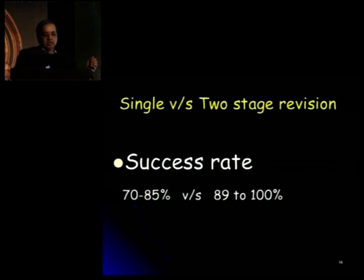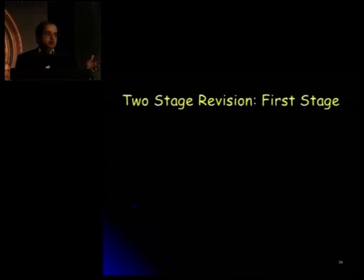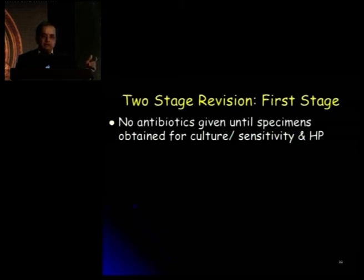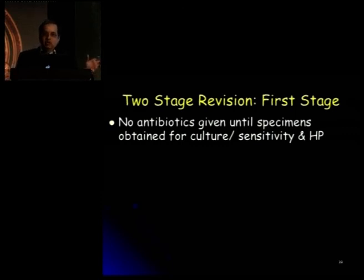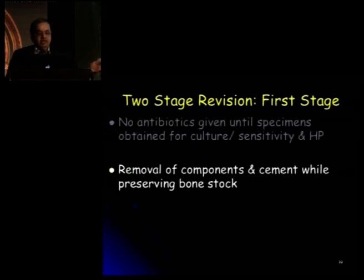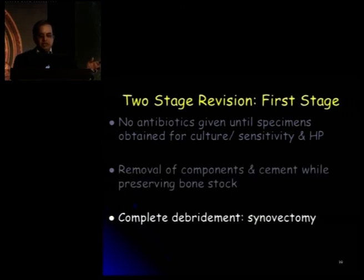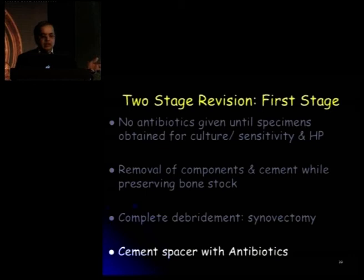When it comes to two-stage revision, the first stage involves removal of the prosthesis and all foreign material. The policy was not to give antibiotics until specimens are obtained during surgery — but a recent paper showed that you can give patients a pre-op loading antibiotic dose prior to going in for the first stage, as it doesn't affect intraoperative tissue cultures obtained. Removal of components and cement is done while preserving bone stock, followed by complete debridement with synovectomy. One needs to put a cement spacer with antibiotics — the most common antibiotic being vancomycin, as it is heat-stable. The standard policy is to use 4 grams of vancomycin per packet of cement.